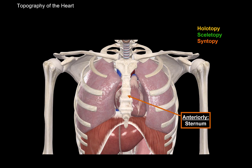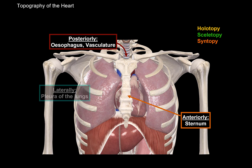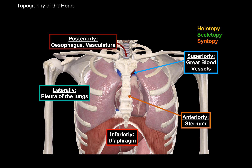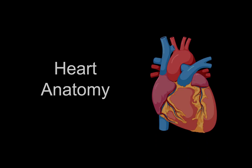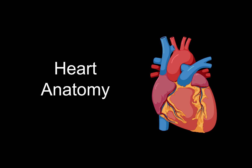The last topic is heart syntopy — the heart's position in relation to other organs. Anteriorly, it lies behind the sternum. Posteriorly, you'll find the esophagus, vasculature, blood vessels, nerves, and lymphatic tissue. Laterally, you'll find the pleura, the protective layer of the lungs. Inferiorly is the diaphragm, and superiorly are the great blood vessels — the aorta and the superior vena cava. That sums up the anatomy of the heart across these last two videos. If you found these videos helpful, please like, share, and comment.